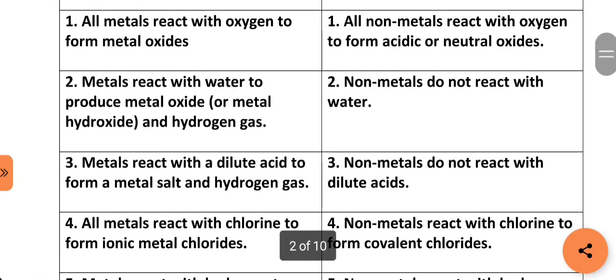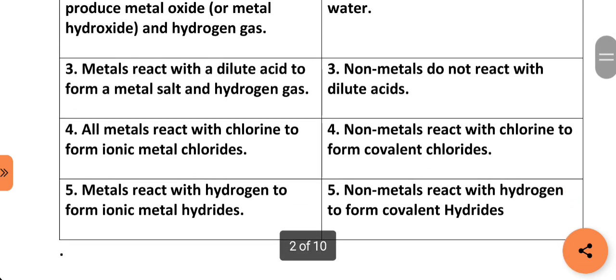Metals react with a dilute acid to form metal salt and hydrogen gas. Non-metals do not react with dilute acid. Non-metals react with chlorine to form covalent chlorides. Metals react with hydrogen to form ionic metal hydrides.